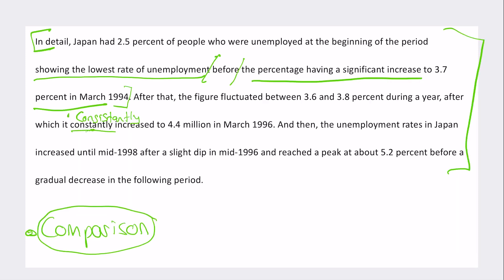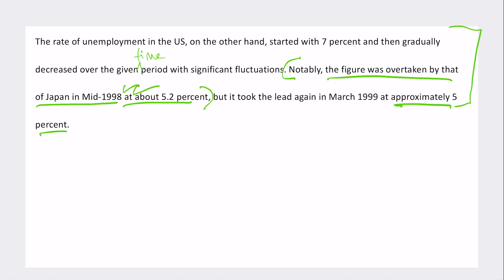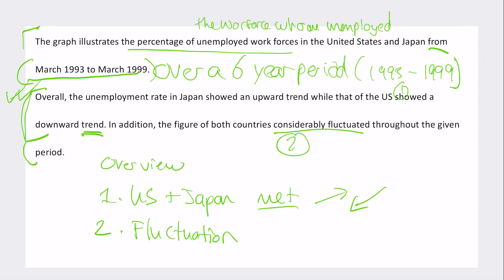The section on Japan is much longer and the section on the USA is much shorter, making the answer feel unbalanced — it seems like the candidate may have run out of time. A better approach would have been: 'The rate of unemployment in the US, on the other hand, was 7% and then gradually decreased over the given time period with significant fluctuations — notably the figure was overtaken by that of Japan in mid-1998 at about 5.2%, but it took the lead again in March 1999 at approximately 5%.' Phrases like 'the figure was overtaken by that of Japan' are particularly natural and effective.